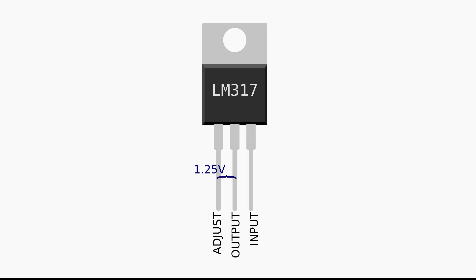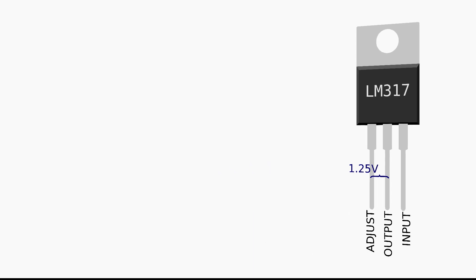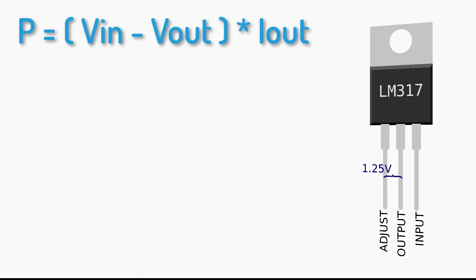Note that as the difference between Vin and Vout gets larger, the power transferred into heat gets larger too. For example, if your input is coming from a 12 volt power supply and you want to run a motor at 5 volts and your motor draws 800 milliamps, the power transferred into heat in the LM317 will be 5.6 watts. So it is mandatory to have a heat sink on your LM317.